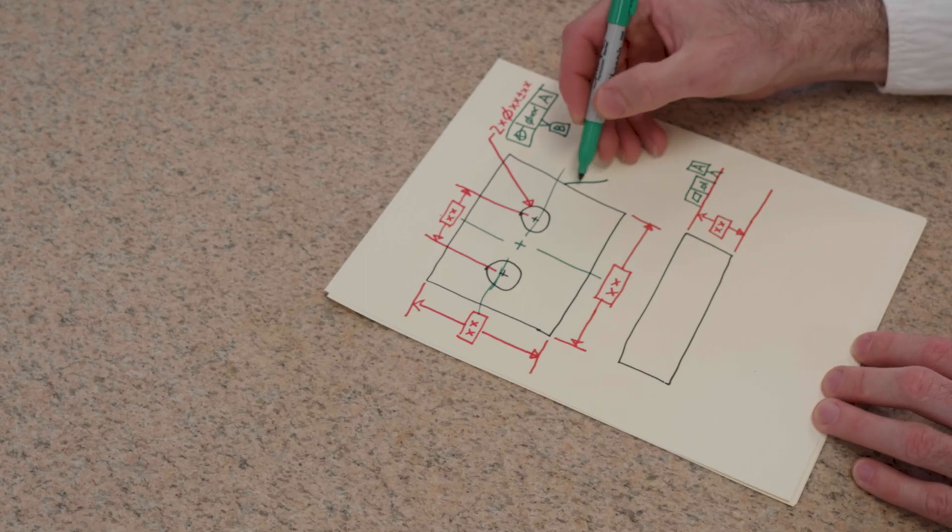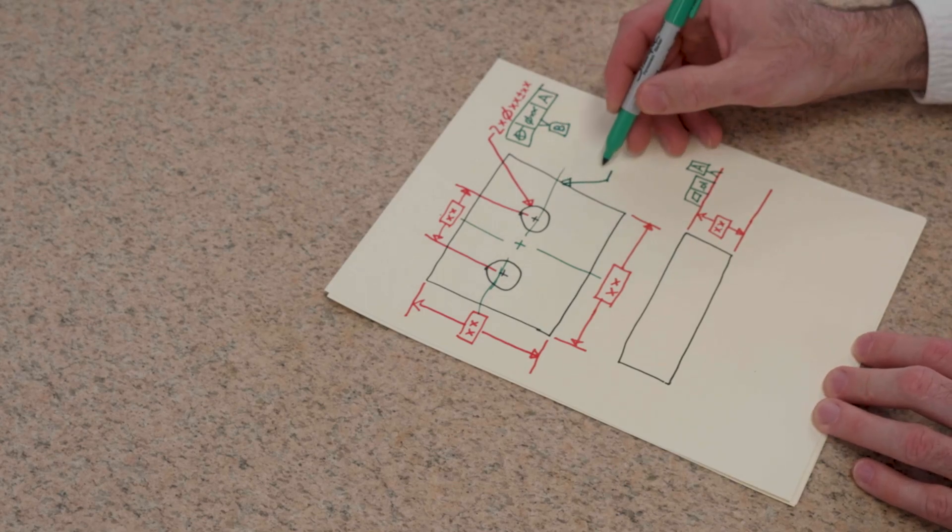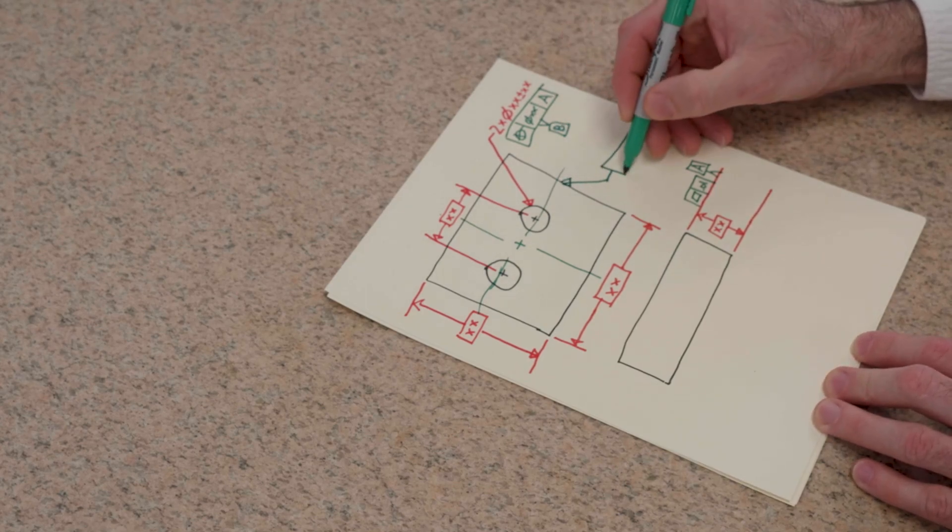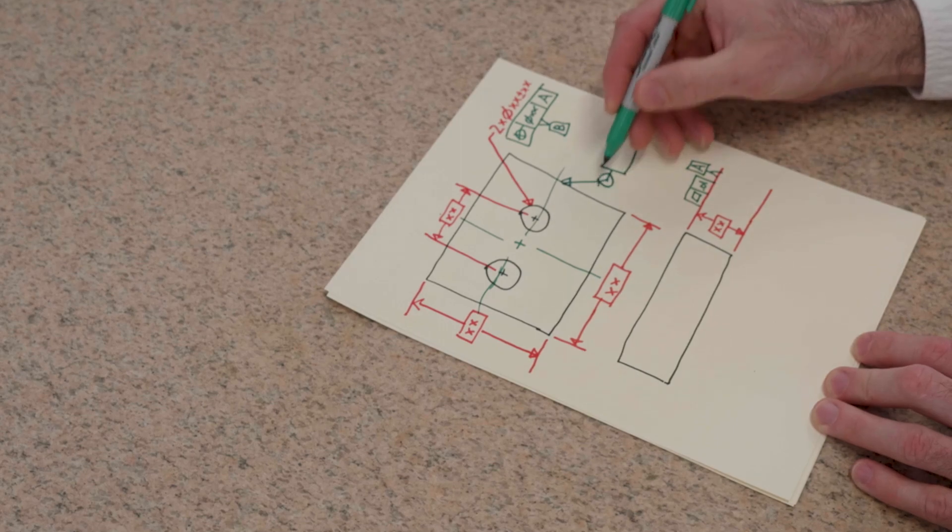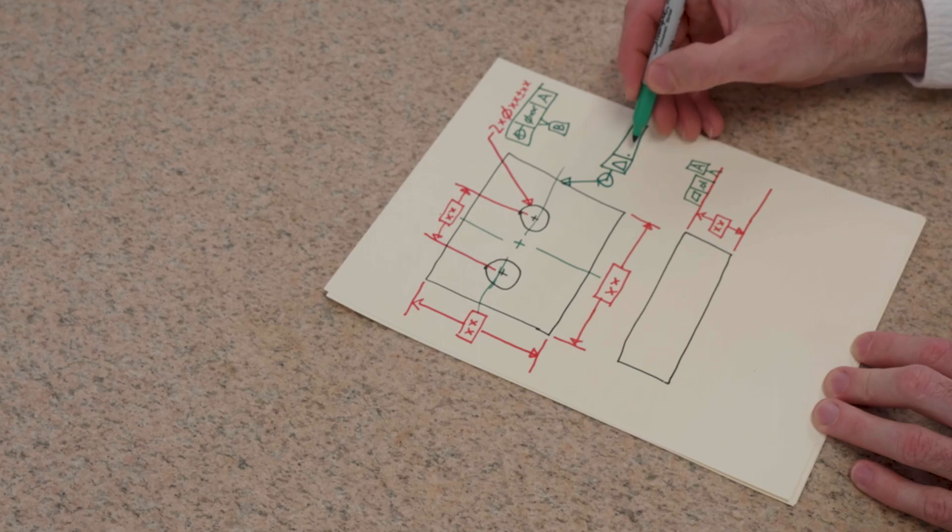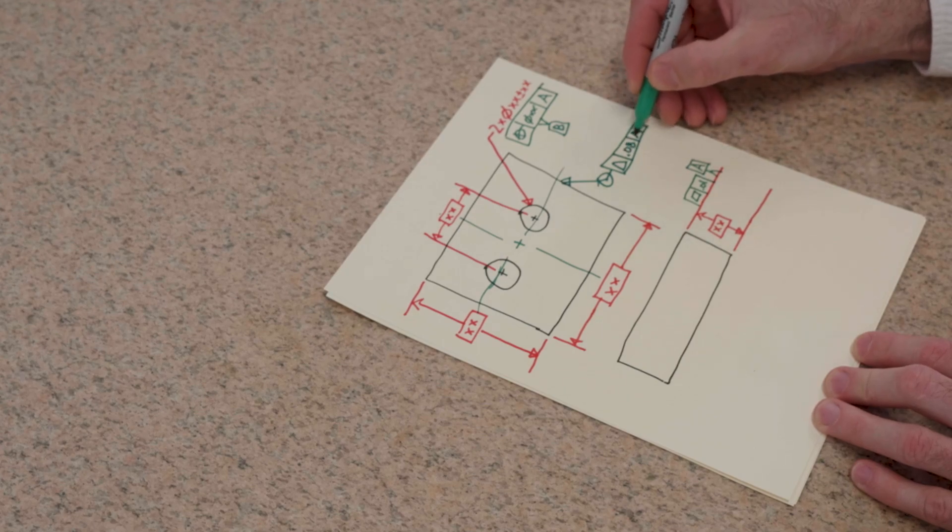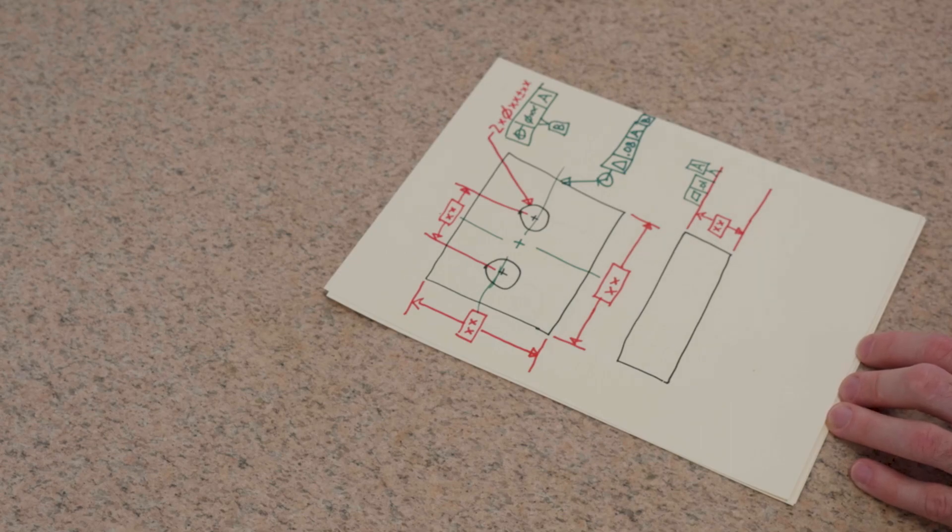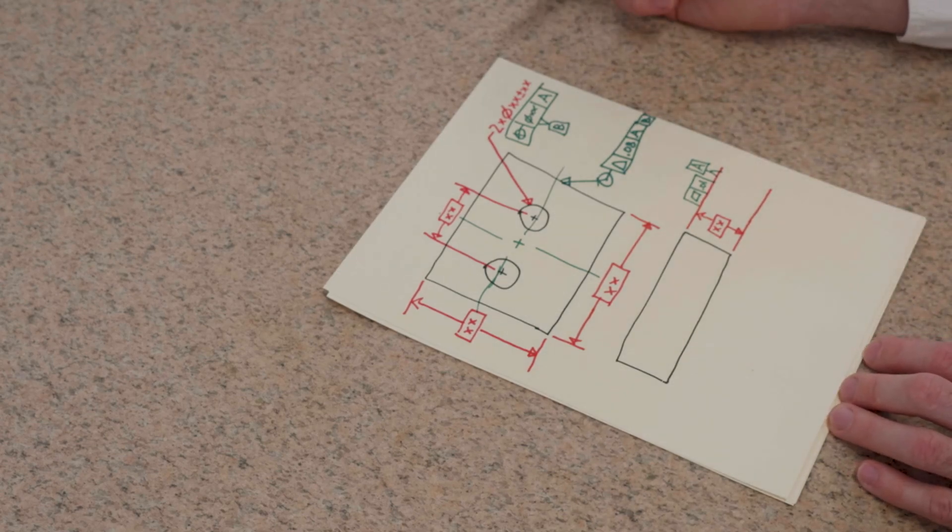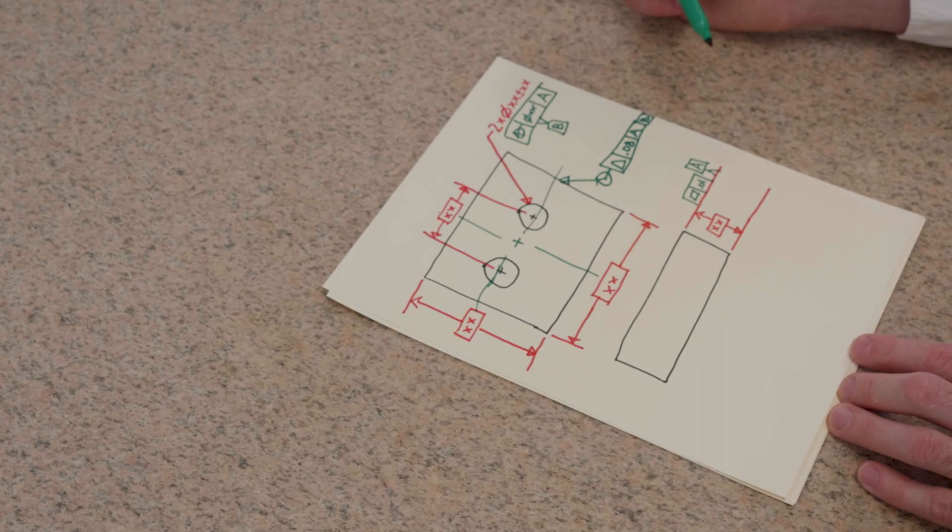The last thing is we'll use those two datums to control the outside of the part. We're going to do an all-around symbol, profile of the surface, make it something kind of large to A, and then I'm running out of room here, but this would be B or preferably B at MMC. So that's all there is to it. The first three steps: